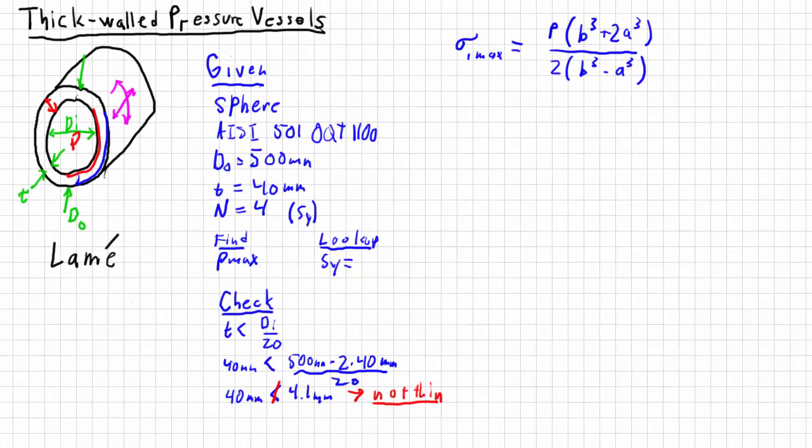Going back to our problem board, we enter in 931 megapascals. We want our stress in our material to not go over one quarter of this yield strength. So I'm going to make this equal to the pressure times B cubed plus 2A cubed all over 2 times B cubed minus A cubed.